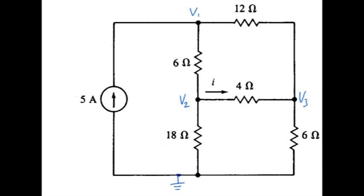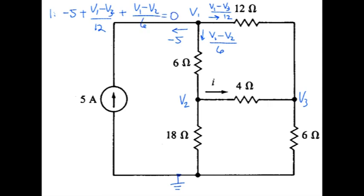So I'll begin by writing the equations for the first node. We have a total of 3 currents, and those currents are minus 5 amps, V1 minus V3 over 12, and V1 minus the other node voltage is V2 divided by 6. So for the first equation, we would write minus 5 plus V1 minus V3 over 12 plus V1 minus V2 over 6 equals 0.